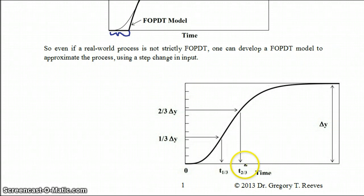First you measure how long it takes for the graph to reach two-thirds of its maximal height and the second would be how long it takes to reach one-third of its maximal height.